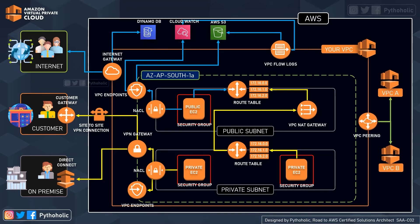Next up is VPC peering, which helps us establish a network connection between two VPCs, enabling you to route traffic between them privately. And last but not the least, we have AWS PrivateLink, which is a very important service that has revolutionized things in AWS VPC. It provides private connectivity between VPCs, AWS services, and on-premise applications securely on the AWS network.